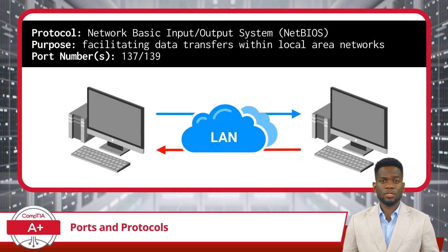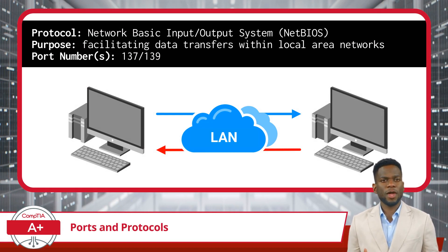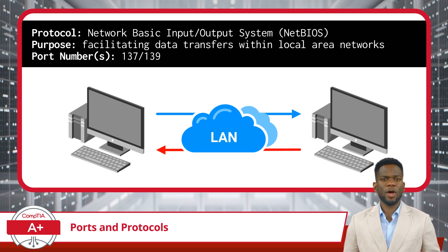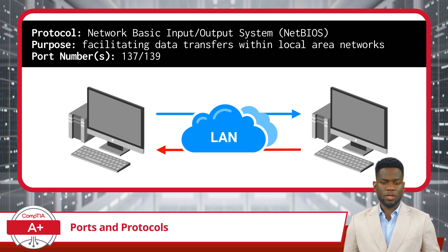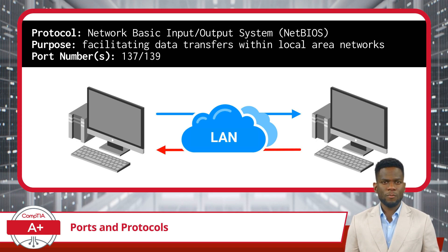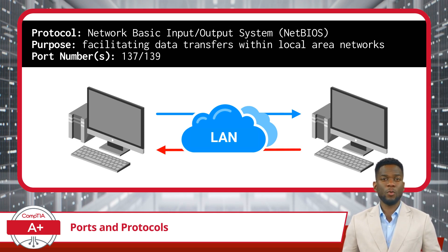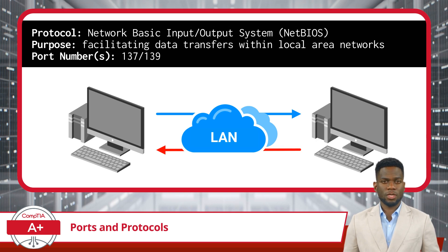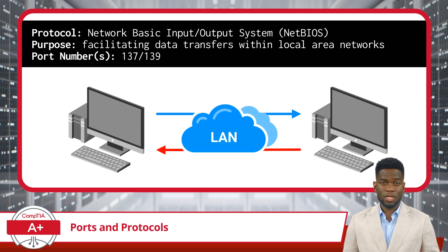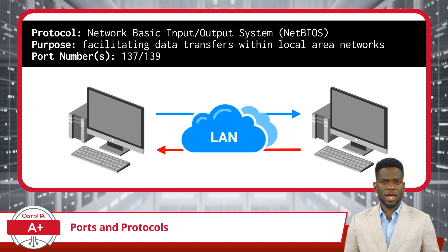We now turn to NetBIOS, or Network Basic Input/Output System. This protocol is a key player in local area networks, primarily facilitating file sharing and printer access within smaller networks. NetBIOS operates using multiple ports: port 137 is designated for name services, essential for identifying networked computers, while port 139 is involved in session services, enabling the establishment and maintenance of network connections. While useful in small-scale environments, NetBIOS is not designed for large-scale internet networking.